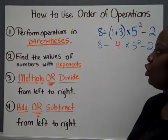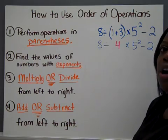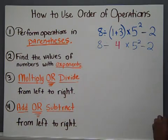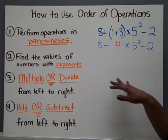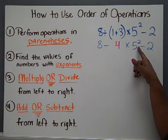Which leads us to step number 2. Find the values of the numbers with exponents. We've talked about exponents, and if you look inside this numerical expression, we have an exponent. 5 squared or 5 to the second power.